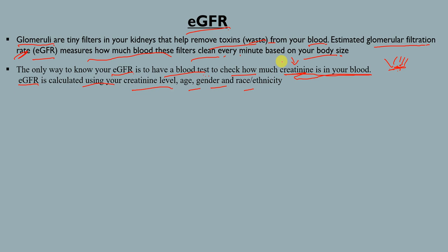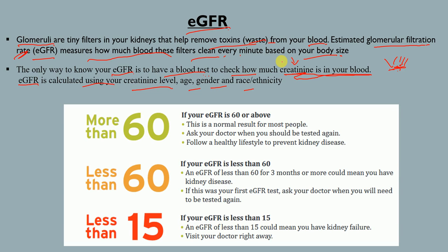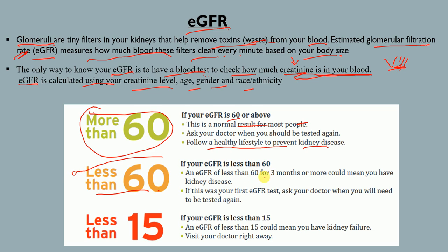The normal level of eGFR is 60 or above — that is the normal result for most people. You may ask your doctor when you should be tested again and follow a healthy lifestyle to prevent kidney disease. But if your eGFR is less than 60 for three months or more, that could mean you have kidney disease, and you should ask your doctor when you need to be tested again.